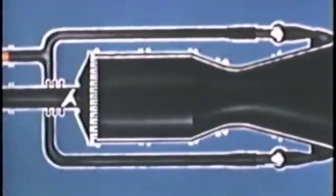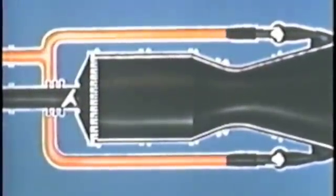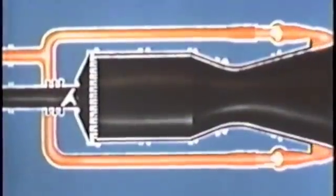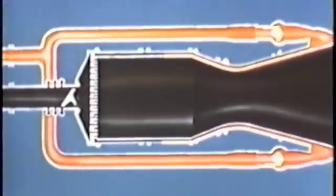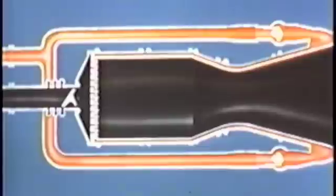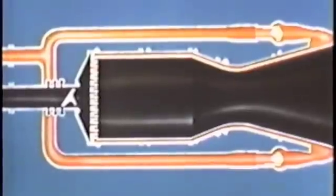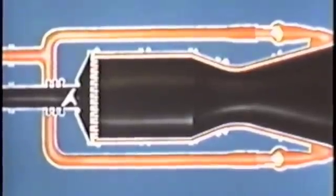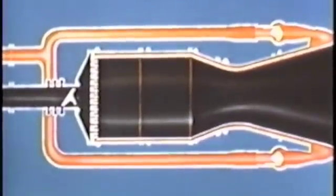The fuel mixture of alcohol and water first enters through a manifold at the nozzle end, flows axially through the motor between the inner and outer walls, and uniformly enters the propellant injector, then flows through the injection orifices into the combustion chamber. 6% of the fuel is injected through radial holes in the inner wall of the combustion chamber to provide film cooling, which augments the regenerative cooling.